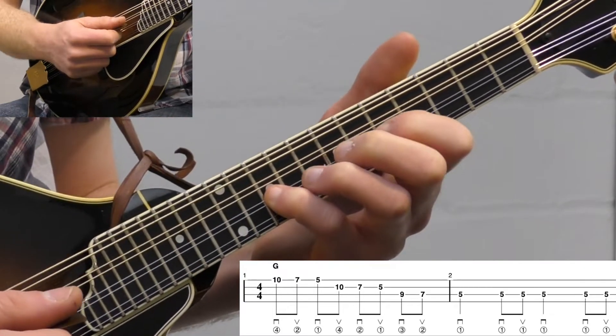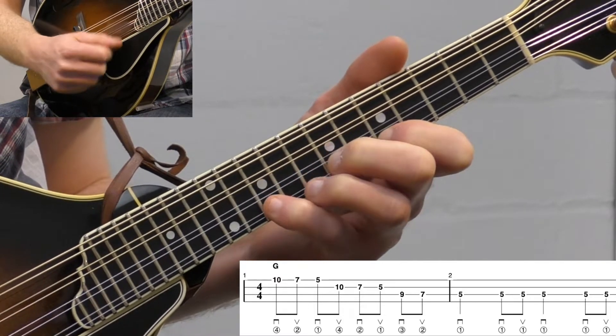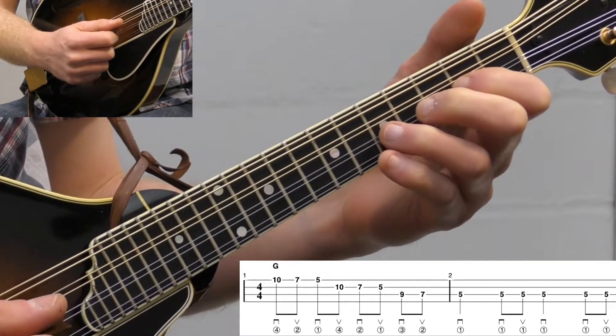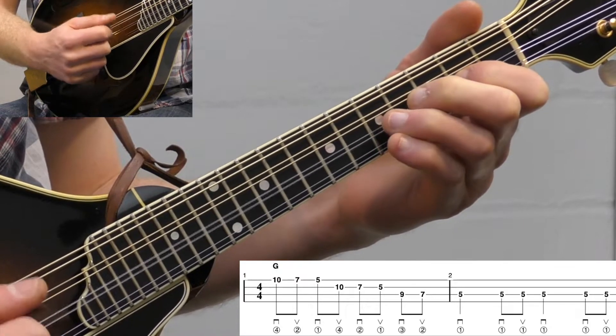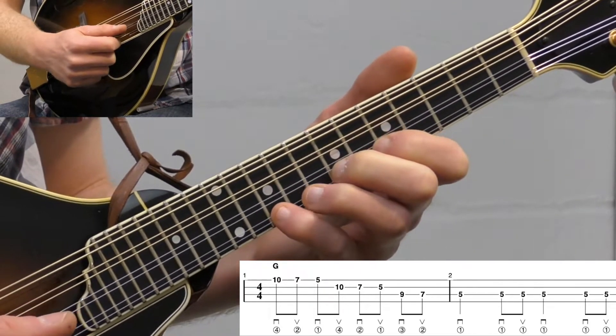We're going to play the 10th fret and then the 7th fret on the E, and then the 5th fret, and then the 10th fret on the A string. It's just kind of walking down these notes: D, B, A, and then G, just an octave up.